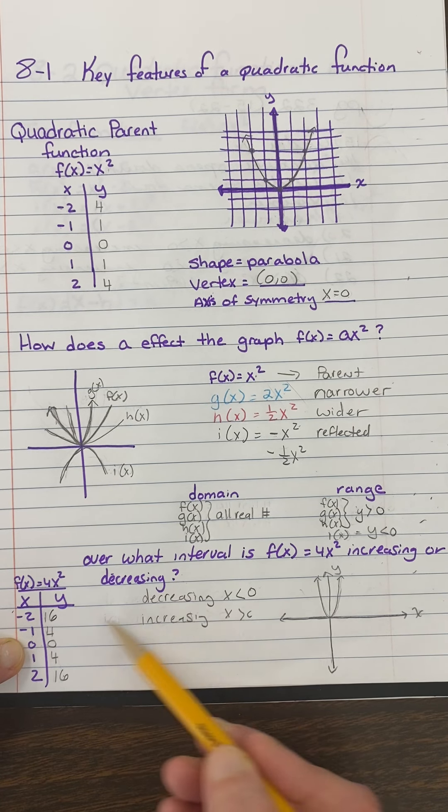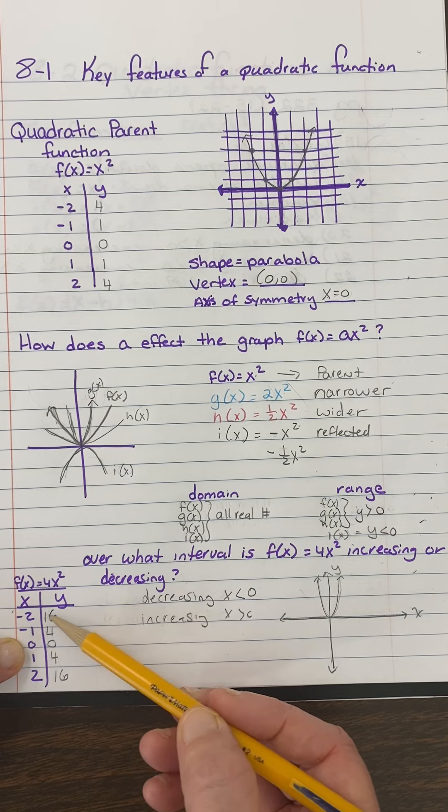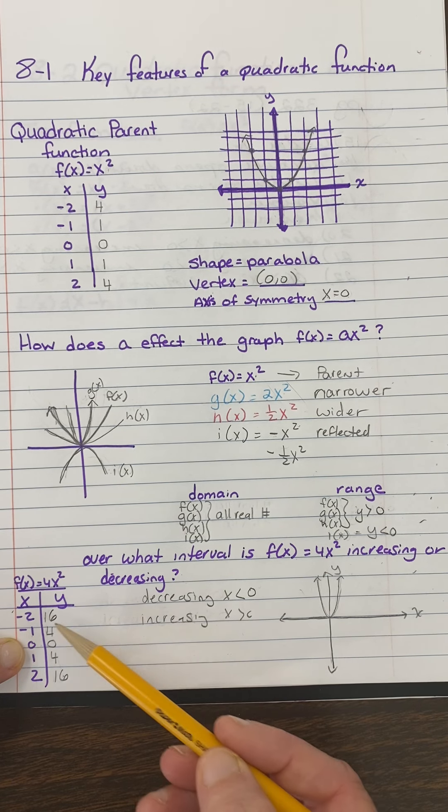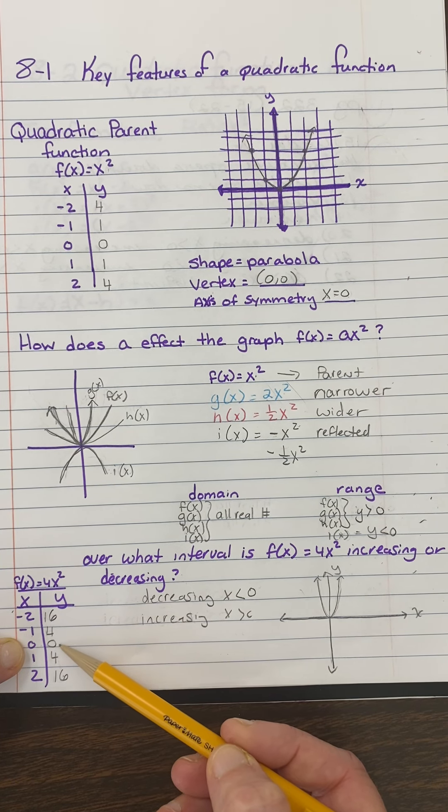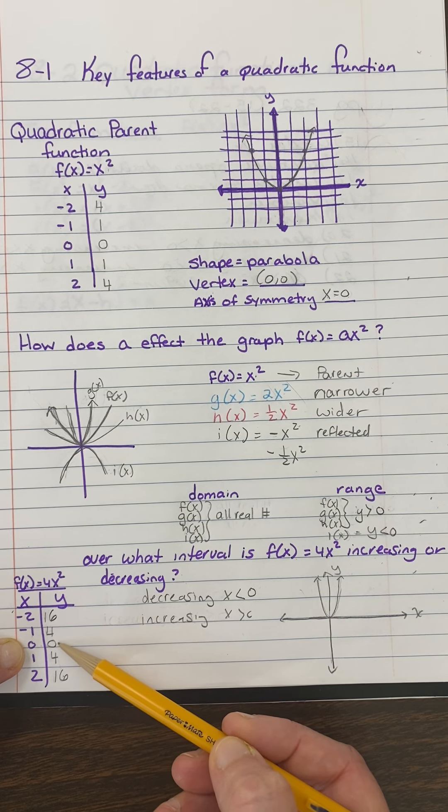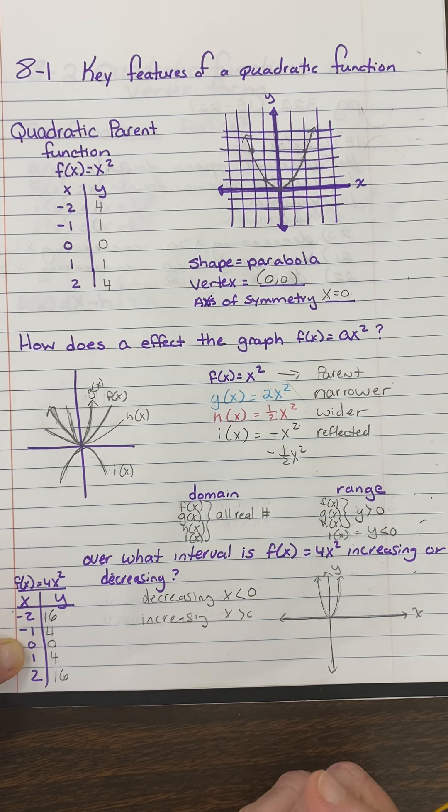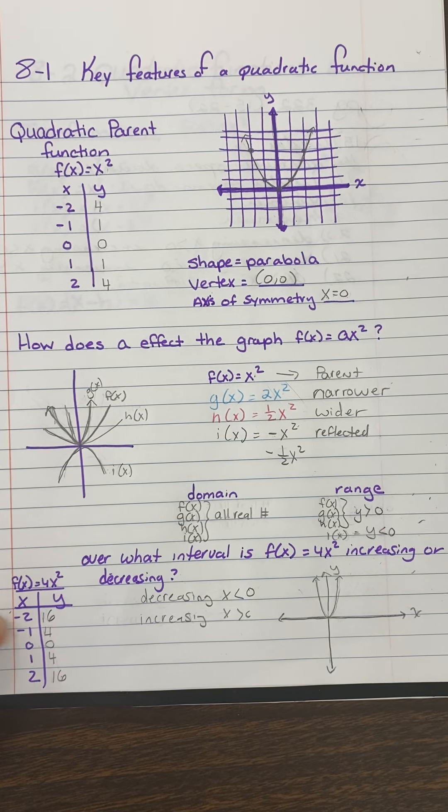So you would have the same answer, because this is the same information. This is just a table, and this is a graph. It is decreasing until x gets to 0, and then once x gets to 0, now it's increasing. Hopefully that helps you out for today. Have a good day.